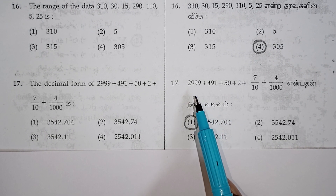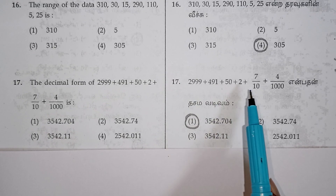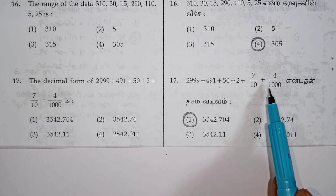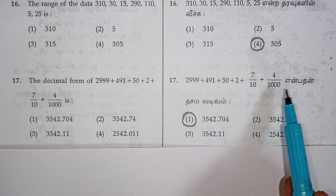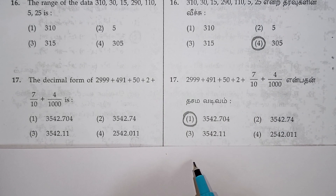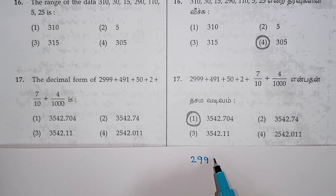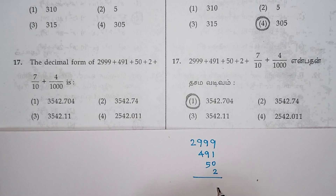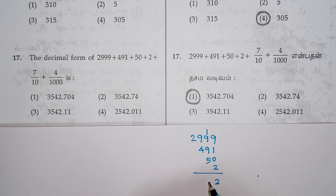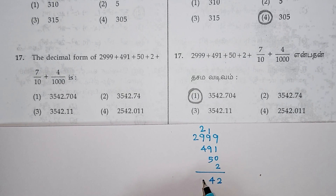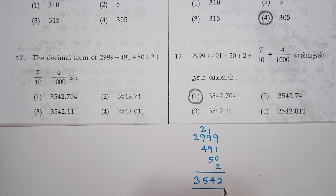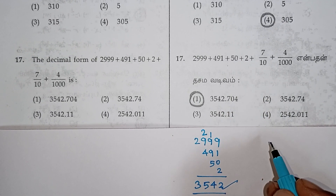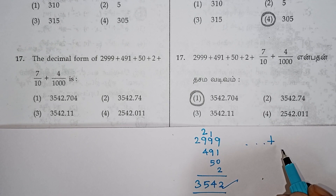Let's see. This is the decimal form. You can add a normal number. You can easily add decimal points — 491, 50, and 2. This will not be added directly. It is a number of decimal points. Full number of decimal form.